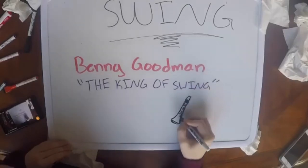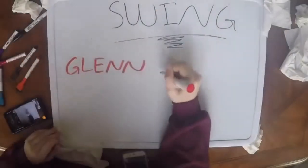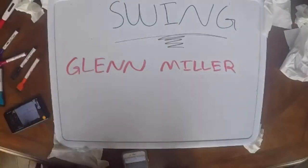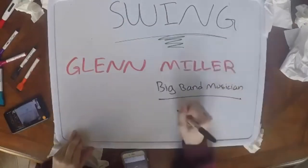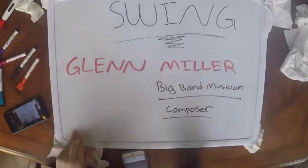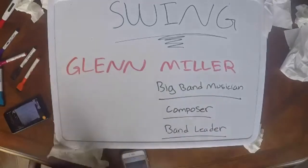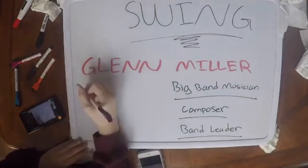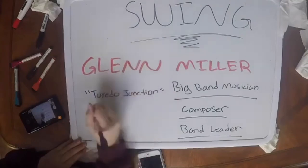Another popular jazz musician who incorporated swing into their work was Glenn Miller. He was an American big band musician, composer, and band leader who led one of the best-known big bands. Miller inspired the World War II generation and boosted morale with his many songs. During 1942, Glenn Miller enlisted in the U.S. Army and led the Army Force Band. A couple of his very famous songs were Moonlight Serenade and Tuxedo Junction.